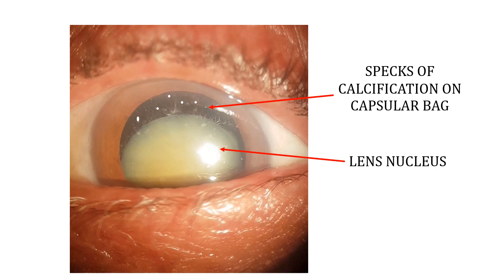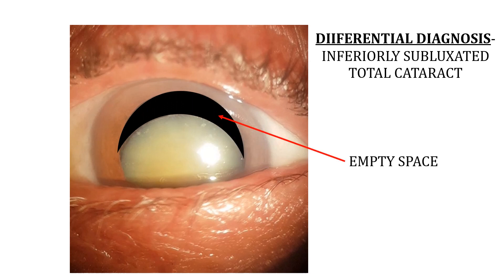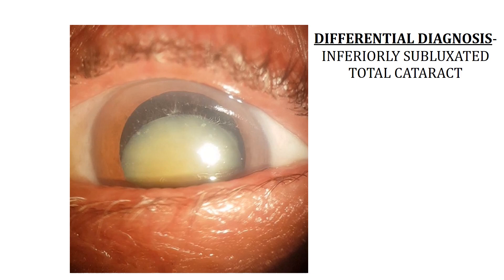It is important to examine these cases carefully because a differential diagnosis of such a condition could be an inferiorly subluxated total cataract. However, in that case, you would find an empty space, broken zonules, or vitreous, because the entire lens along with the capsular bag has been displaced. But in Morgagnian cataract with absorbed cortex, the bag is still in its place and the slit lamp beam will form a slit here, confirming the presence of a capsular bag.